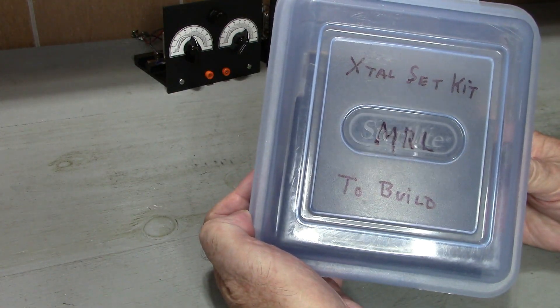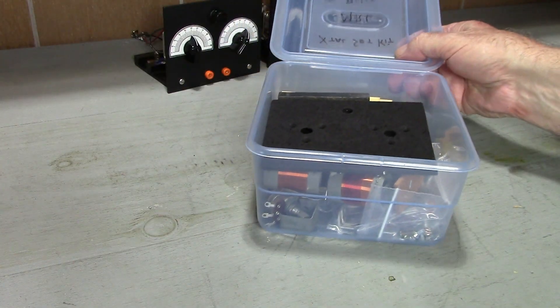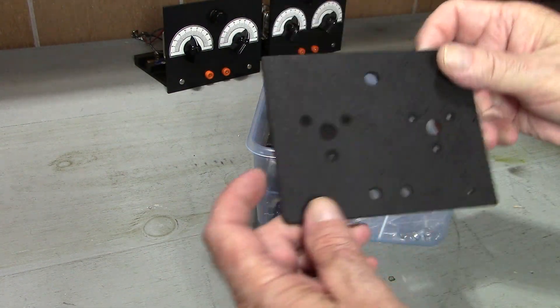Here's an actual number 18 kit from MRL. I got this from eBay. On the lid it says Crystal Set Kit to Build, but he never built it.